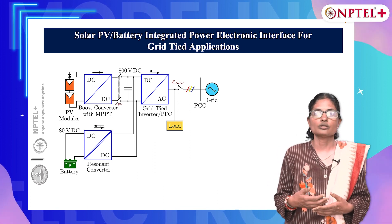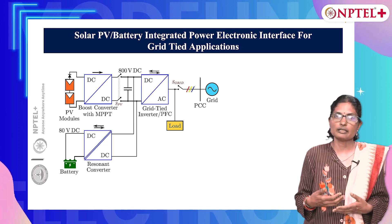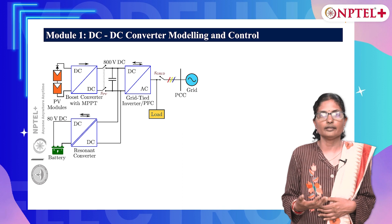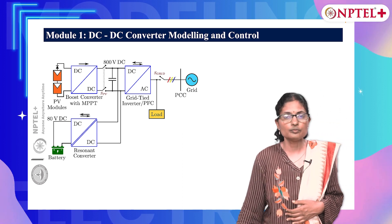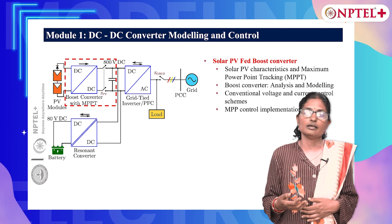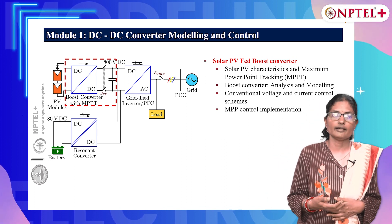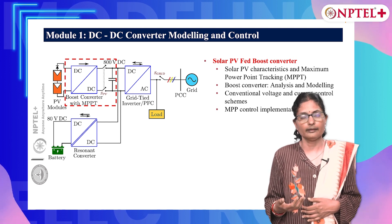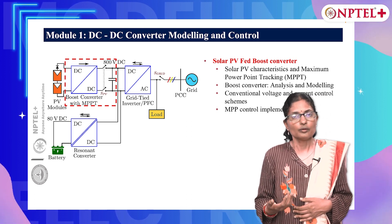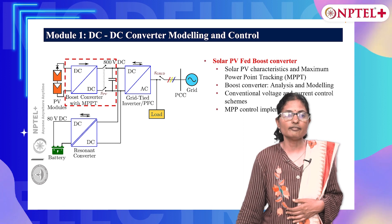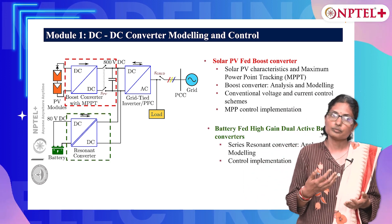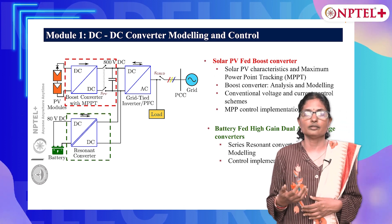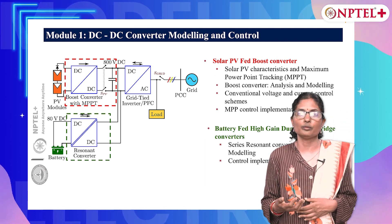This course is further divided into 4 sub-modules. In Module 1, we shall see DC to DC converter modeling and control. In this module, we shall see a solar PV fed non-isolated boost converter modeling, control and design, followed by a battery fed high gain resonant converter. This boost converter and the resonant converter together form the DC bus of 800 volts for the inverter.